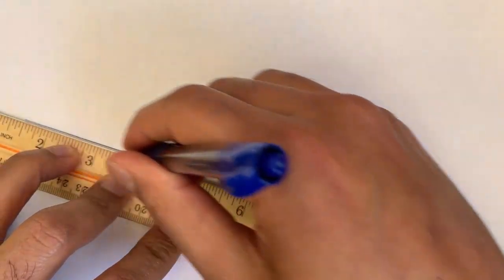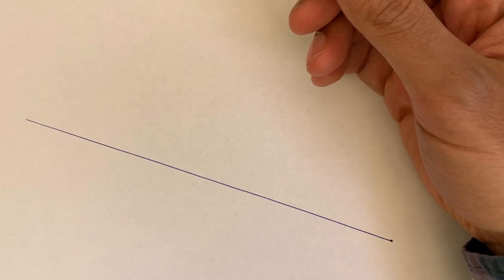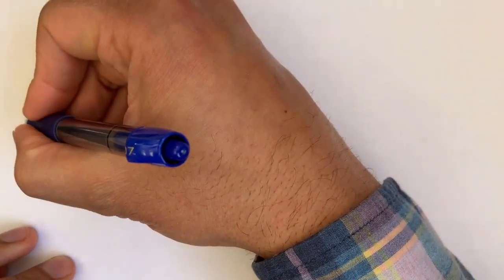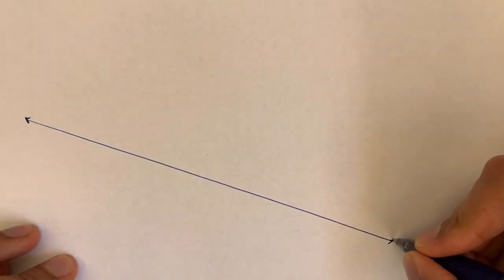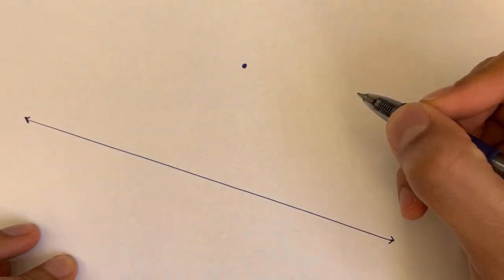Let's say that we have a line, drawing it right over there, and our goal is to construct another line that is parallel to this line that goes through this point. How would we do that?